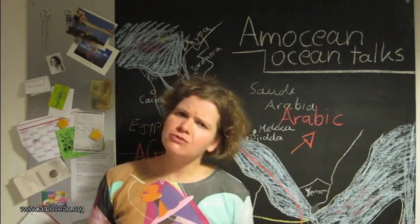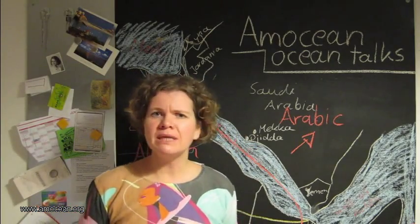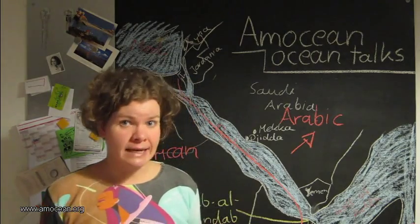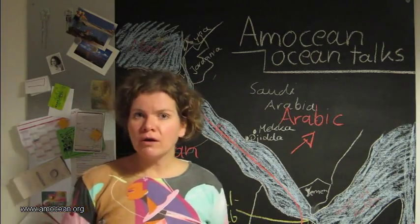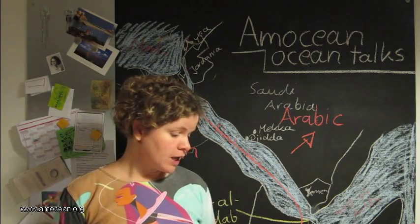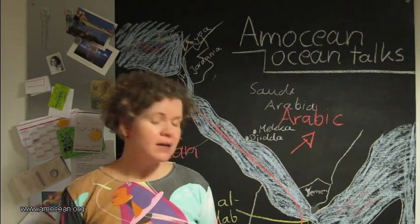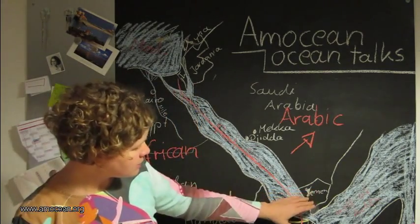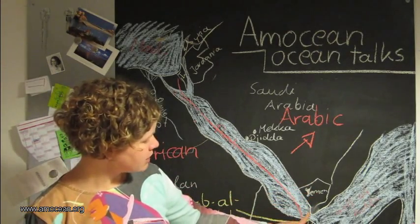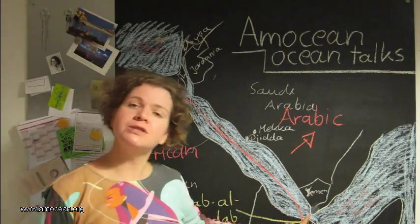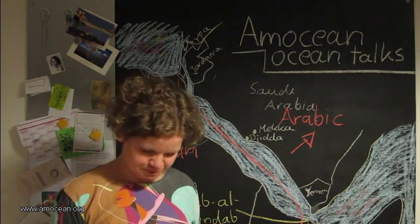Most of those volcanoes are nowadays dormant — they don't erupt, they are not active. But one of them, the volcano of Jabal al-Tayr, located between Yemen and Djibouti or Eritrea, erupted in 2007, so not that long ago.